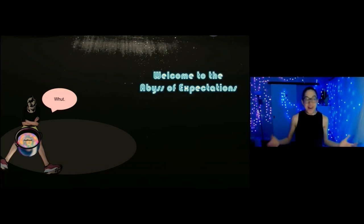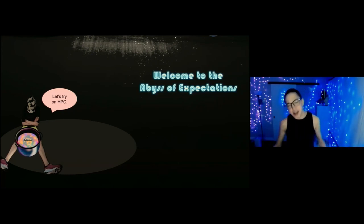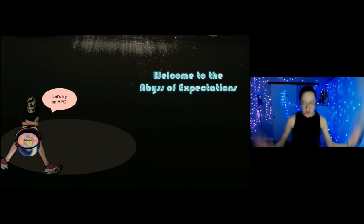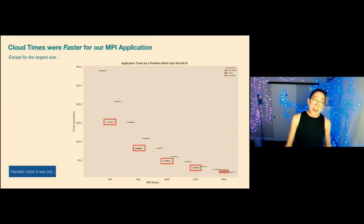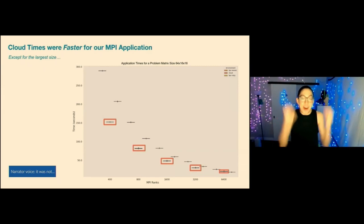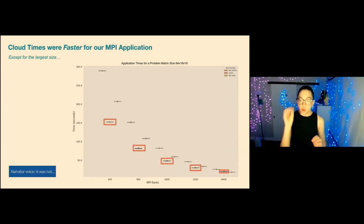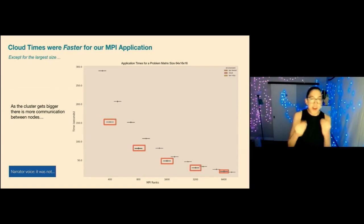Sitting in my abyss of expectations with a stewing pot of confusion — what just happened? This didn't even work before. My confusion very quickly turned to delusion — I was still going to try on HPC and I was sure it would be better. Again, shocked. What you're looking at, with HPC added and cloud with red boxes around it: the cloud times were actually faster for our MPI application, except for the largest size where one HPC cluster was slightly faster. That suggests there's still some issue with communication between nodes at larger sizes.